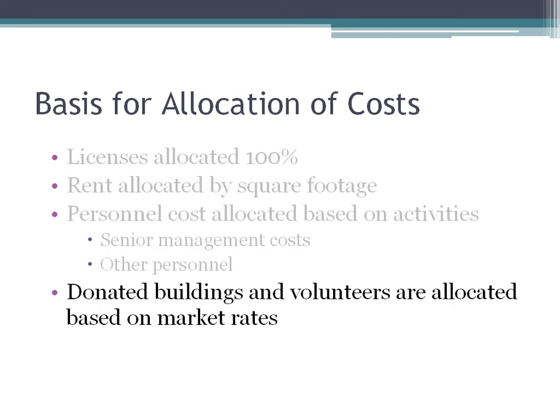Not all items are in the chart of accounts. Donated buildings and volunteers are allocated based on market rates. The point is that all costs in the chart of accounts, including the opportunity cost of donated buildings and volunteers, are allocated to the office of information systems and eventually to the electronic health record.